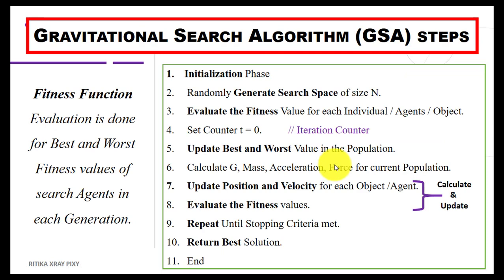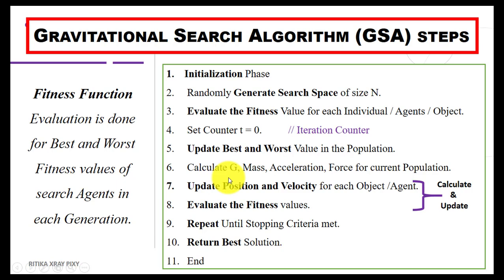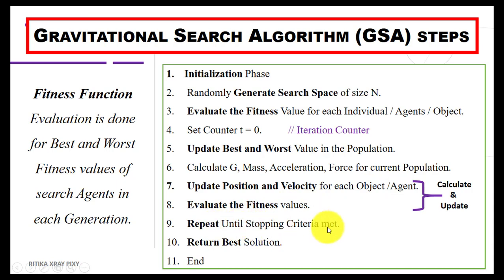The Gravitational Search Algorithm steps are: first is the initialization phase; second, generate population randomly for each search agent of size n; after that, evaluate the fitness value for each search agent and set the counter; then check the best and worst in the population; calculate the gravitational constant, mass, acceleration, and force for the current population; then update the position and velocity for each search agent; evaluate fitness values again; and repeat this process until the stopping criteria are matched.